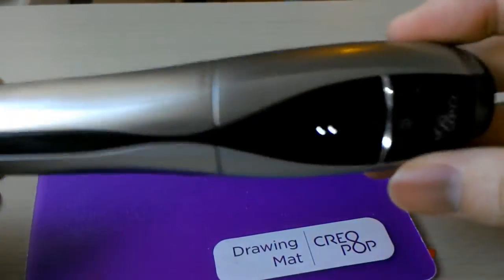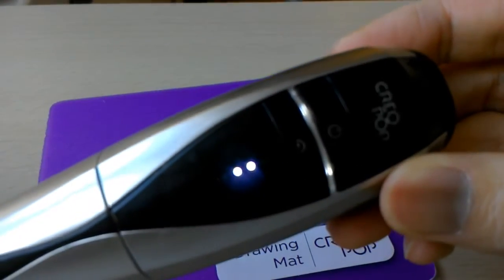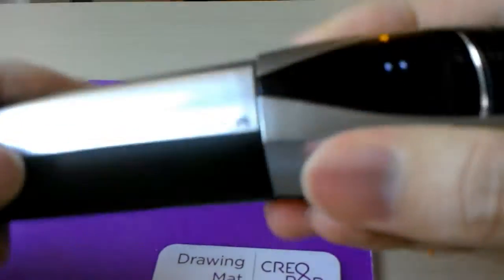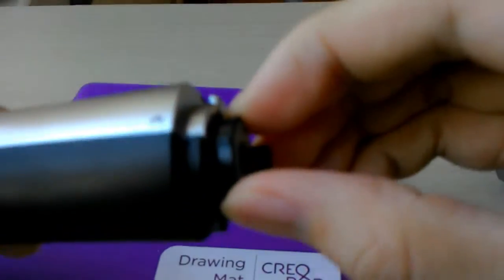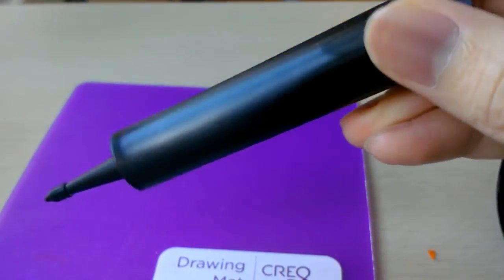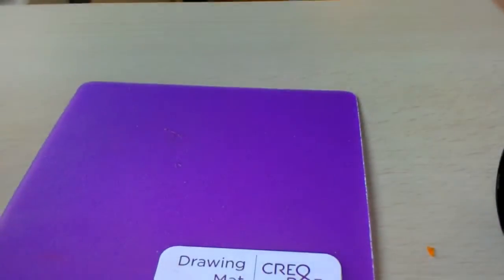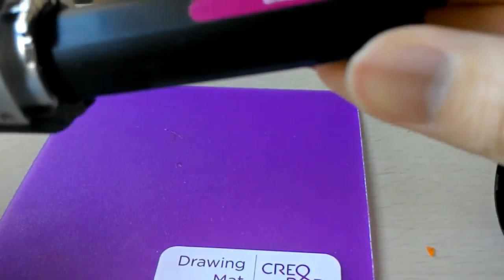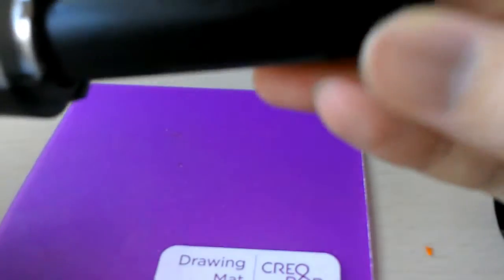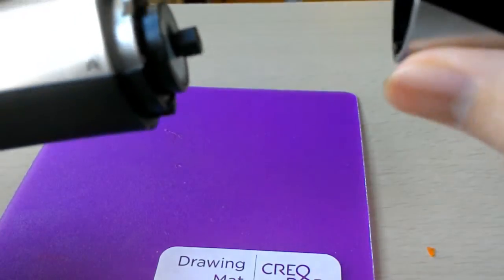But this one, Creopop, is very different from those plastic melting 3D pens. It uses special ink. If you don't harden this ink, it's just like jello or jam, kind of liquid but not really liquid, but not hard either.